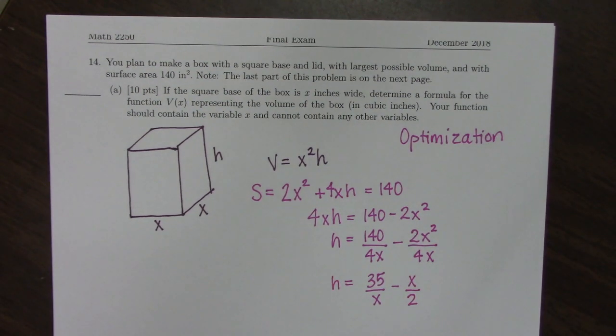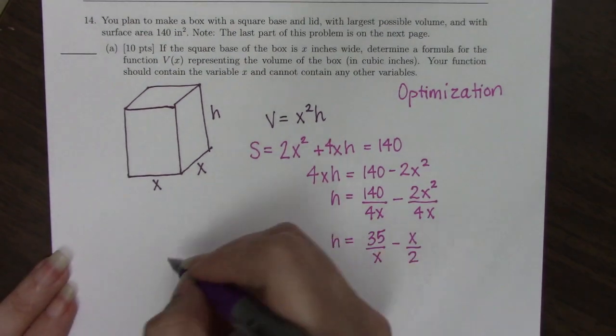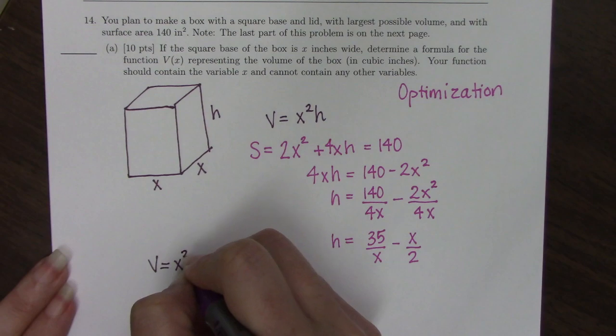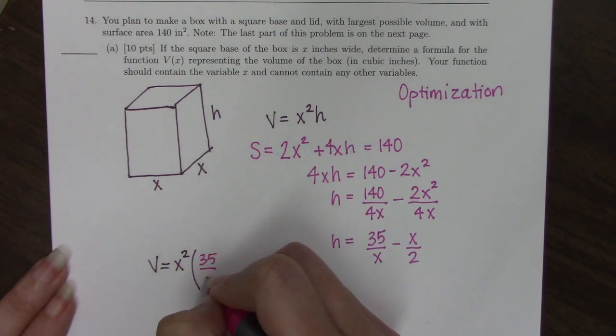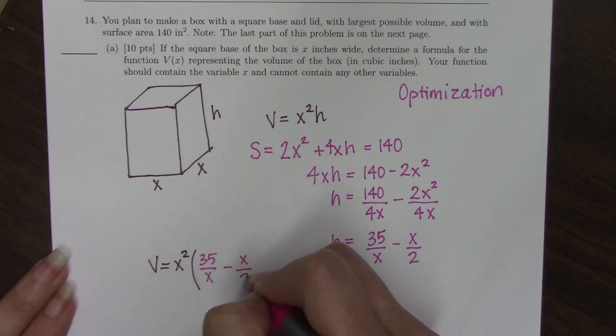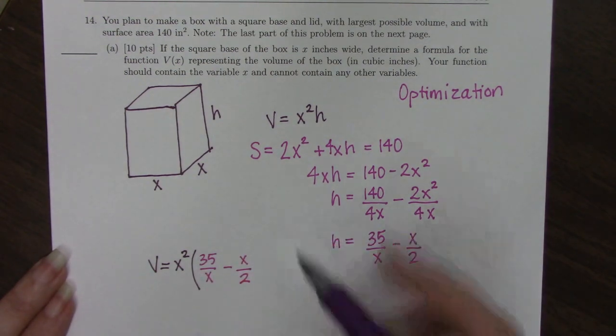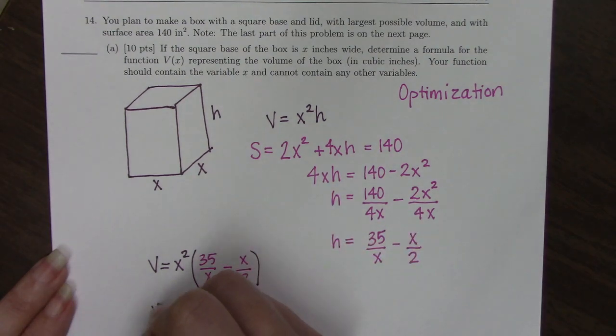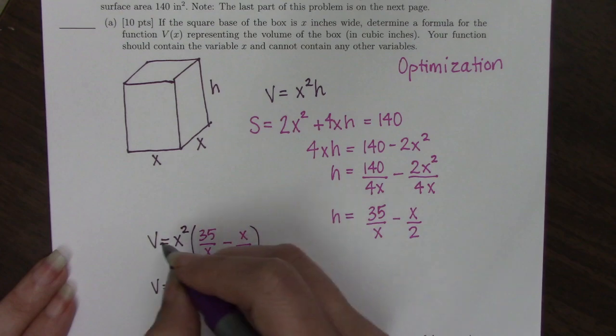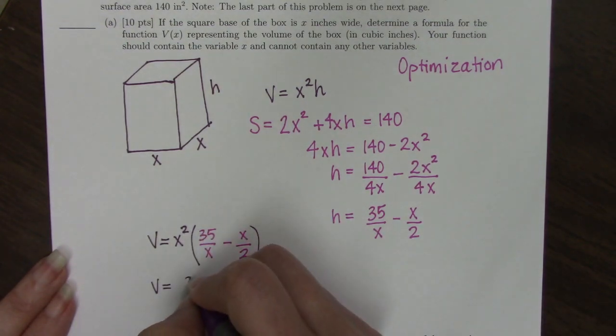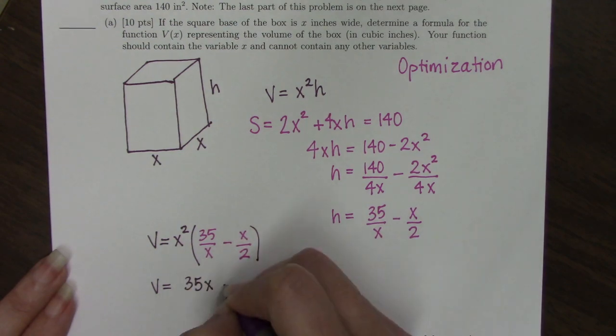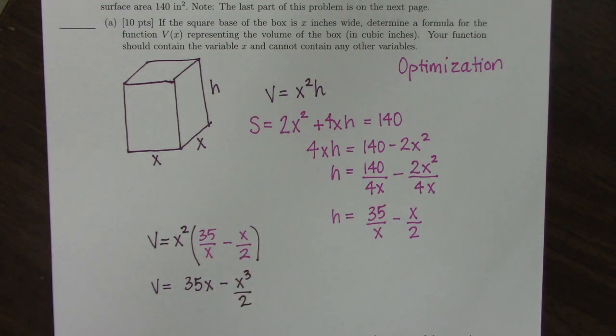Now when I go back and write my new volume equation, volume is x² times (35/x - x/2). And once again since I know derivatives are in my future because it's calculus, I'm going to go ahead and distribute this x². So when I distribute it here, one of my x's cancel and I just get 35x - x³/2. If I have to take the derivative of this, it's going to be really easy to do it of this function.